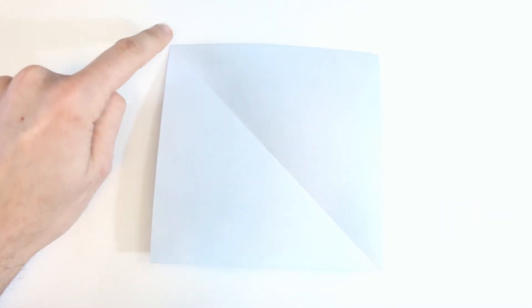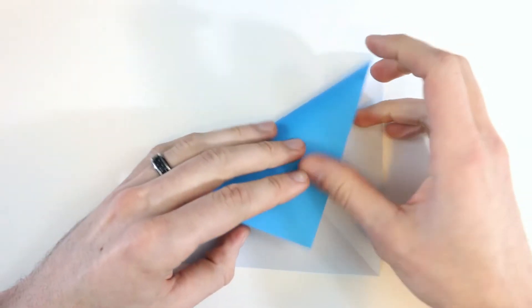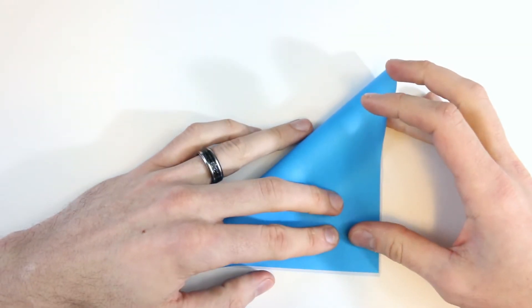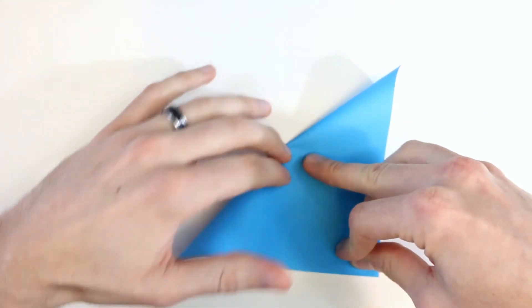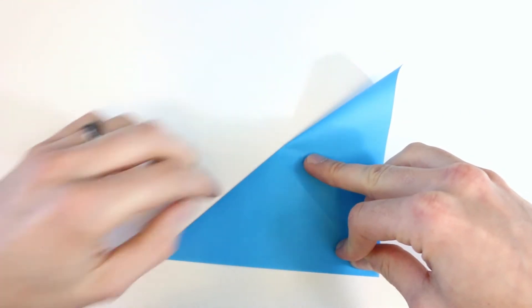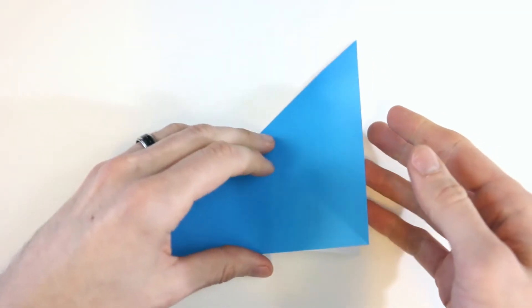Next bring the top left corner down to the bottom right corner. And then crease that one. And then unfold again.